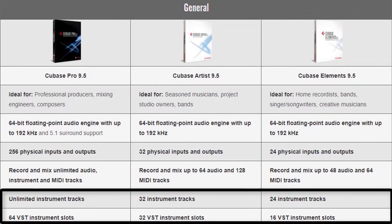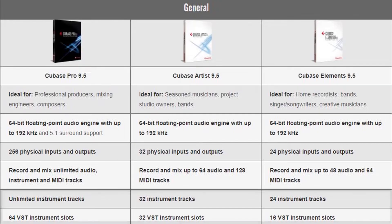You've also got 24 instrument tracks and 16 VST instrument slots. If you imagine running all of those simultaneously, that would be quite a big project. So Elements really does give you the option to be a fully-fledged DAW — the quality is there, and the project capacity is there. Even though it's a cut-down version, it doesn't stop you from being creative and achieving exactly what you want.